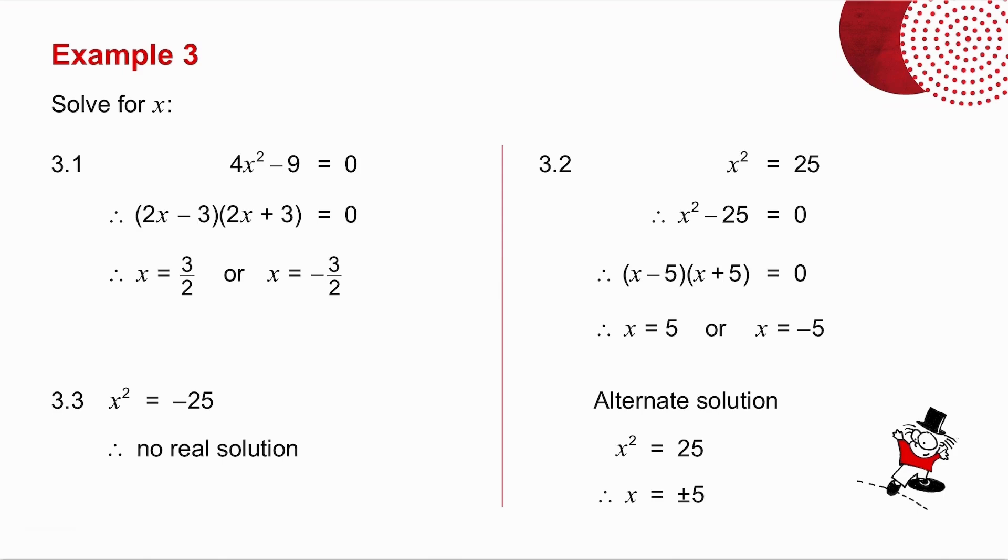In the first example, I've got 4x squared minus 9. That's difference of two squares. So either 2x minus 3 is 0, in which case x is 3 over 2, or 2x plus 3 is 0, so x is minus 3 over 2.